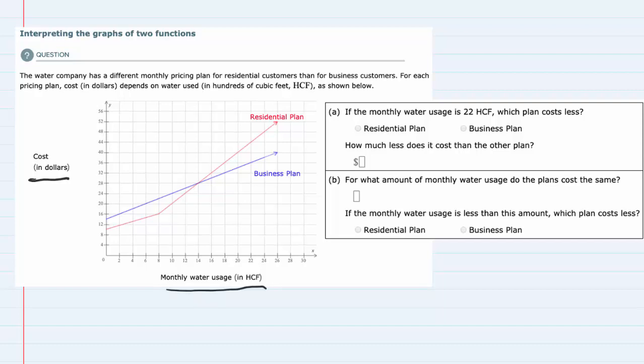Two graphs here: the blue one represents the cost for businesses, and as usage goes up, their price goes up. The residential plan, again, as usage goes up, the price also goes up.